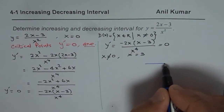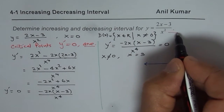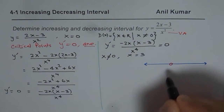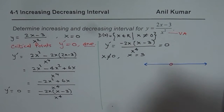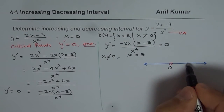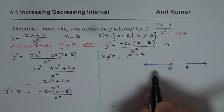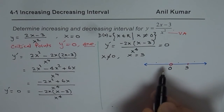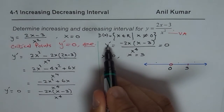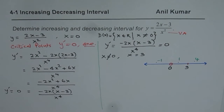Let me draw the number line. We have the vertical asymptote at x equals 0, shown as a hole since that point is not in the domain, and a critical number at x equals 3. These two points divide the number line into three regions. We take test points: minus 1 for the left region, 1 for the middle region, and 4 for the right region.